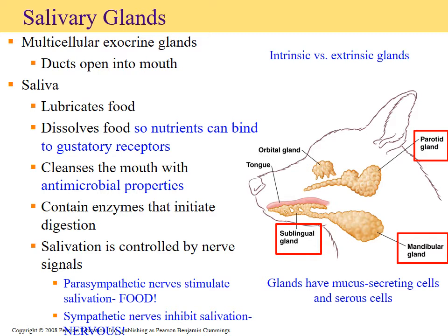The sympathetic nervous system, by contrast, produces a saliva full of mucus that tends to dry out the mouth — that 'cotton mouth' feeling you get during public speaking or when you're nervous. Your mouth goes very dry because the sympathetic nervous system is stimulating a mucus-heavy saliva.